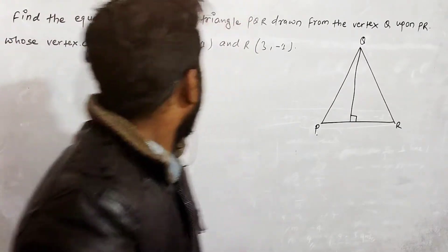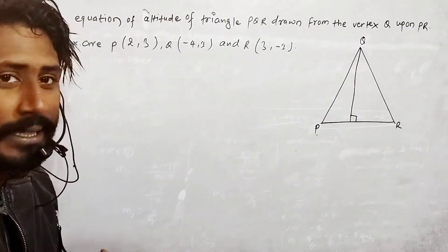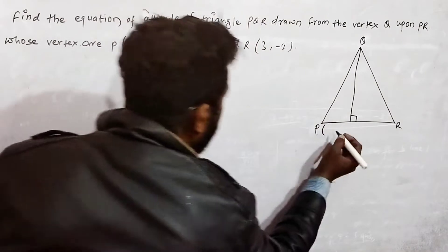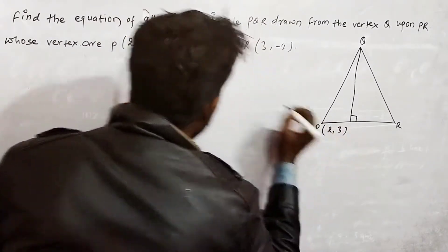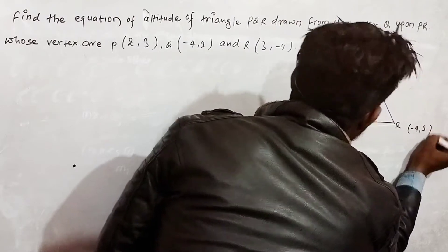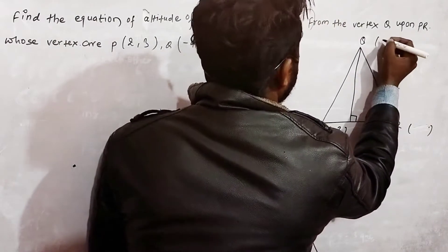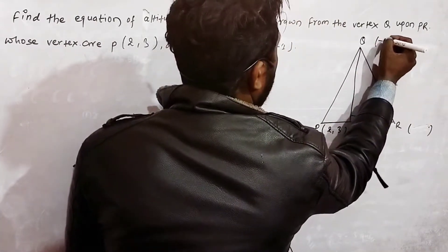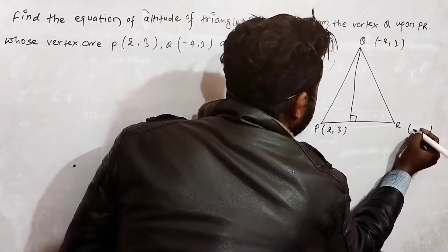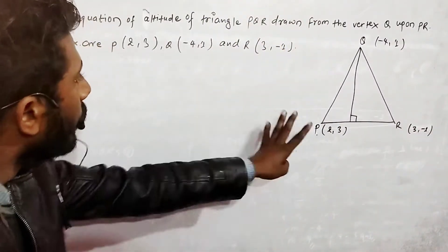We are given vertex P at (2, 3), vertex Q at (-4, 1), and vertex R at (3, 1). We will use these coordinates to solve the question.